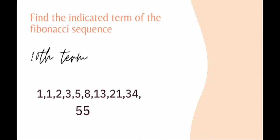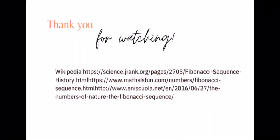Now let's try to find an indicated term of the Fibonacci sequence. The 10th term of the Fibonacci sequence is 55. Always remember the simple rule: add the last two terms to get the next term. Thanks for watching!